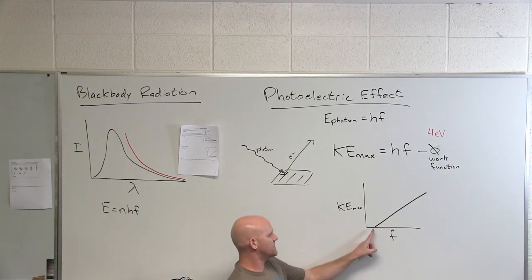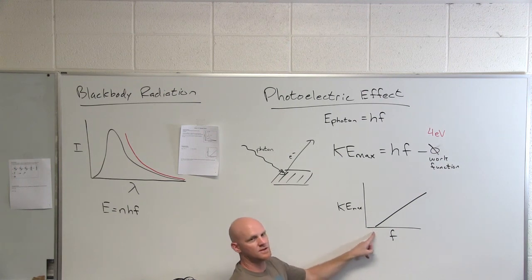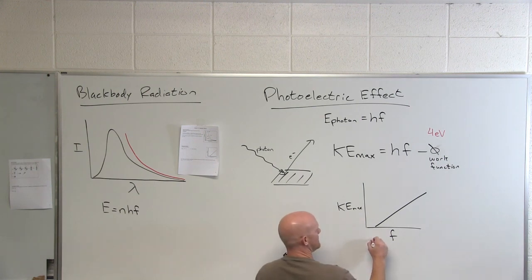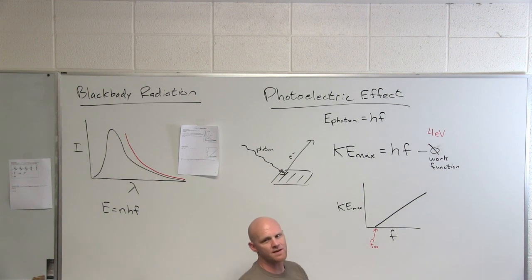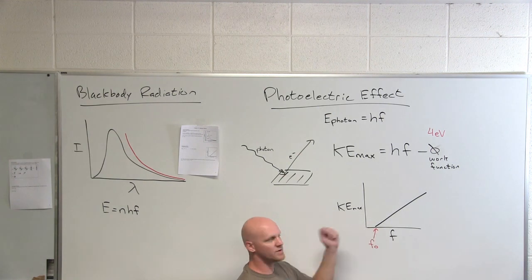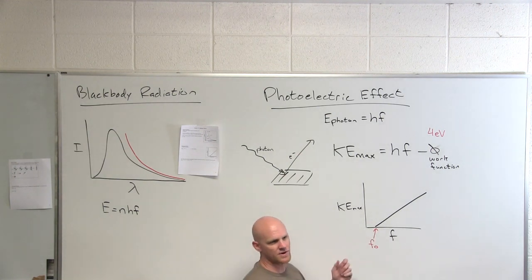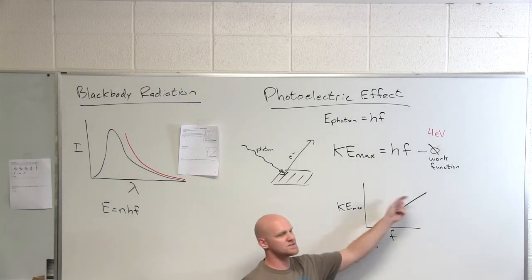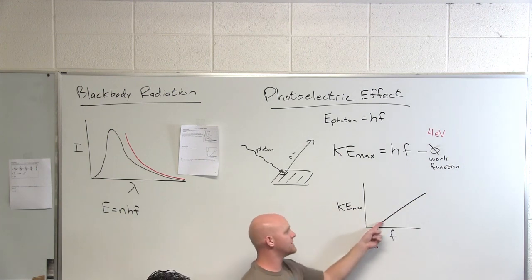If you look here, you find out that if you're below a certain frequency, you get nothing. There's no ejected electrons whatsoever. You've got to hit some threshold frequency, which I'll just call F-naught. Once you're above that threshold frequency, then all of a sudden the kinetic energy starts going up. Right at that threshold frequency, you've got no excess kinetic energy for the electrons. But the higher the frequency of the light, the higher the energy of that light, the more and more that maximum kinetic energy is going to grow.